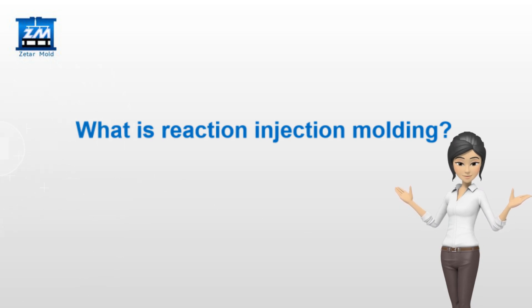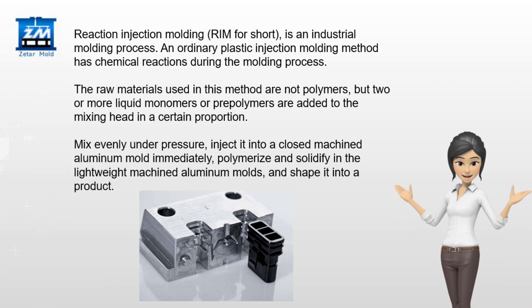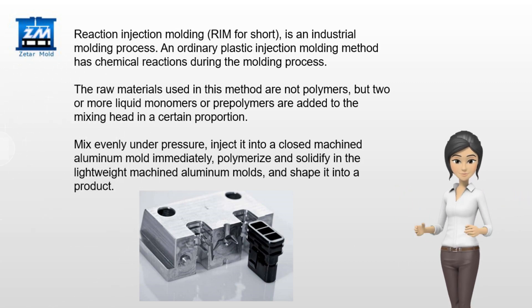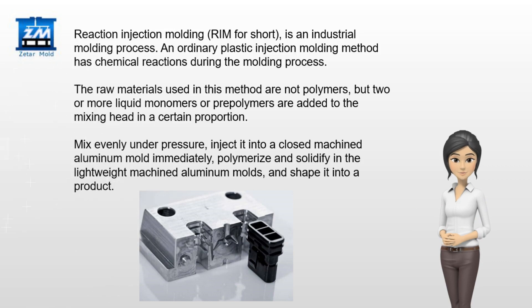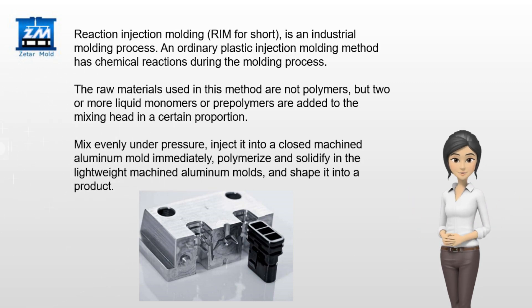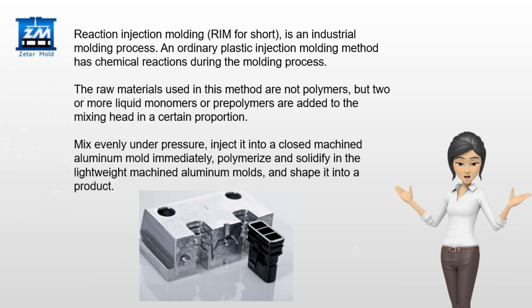What is Reaction Injection Molding? Reaction Injection Molding, RIM for short, is an industrial molding process. Unlike ordinary plastic injection molding, the raw materials used are not polymers, but two or more liquid monomers or pre-polymers added to a mixing head in a certain proportion, mixed evenly under pressure, then injected into a machined aluminum mold to polymerize, solidify, and shape into a product.